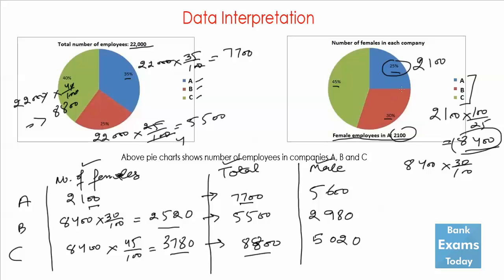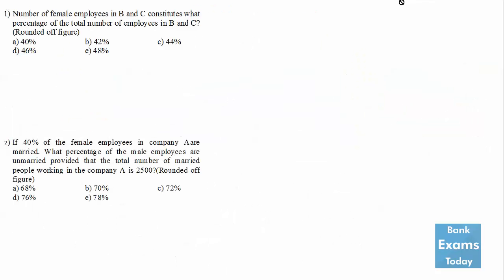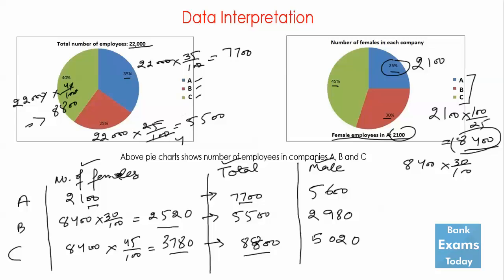Now let's look at the questions. Question 1: the number of female employees in B and C constitutes what percentage of the total number of employees in companies B and C? There are 2520 female employees in company B and 3780 female employees in company C.